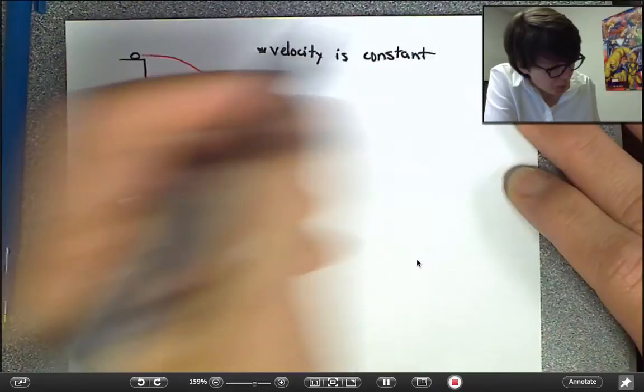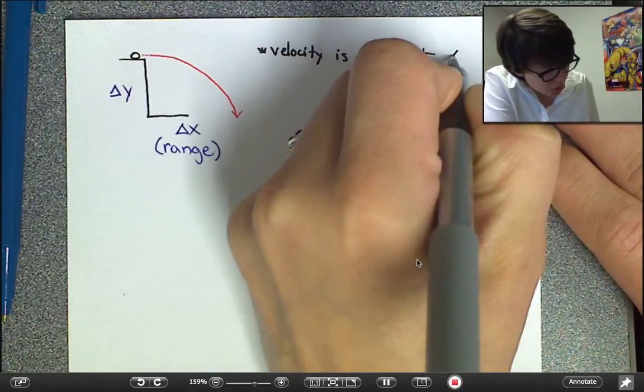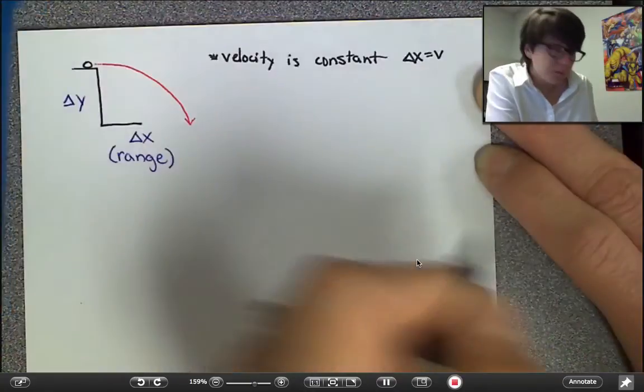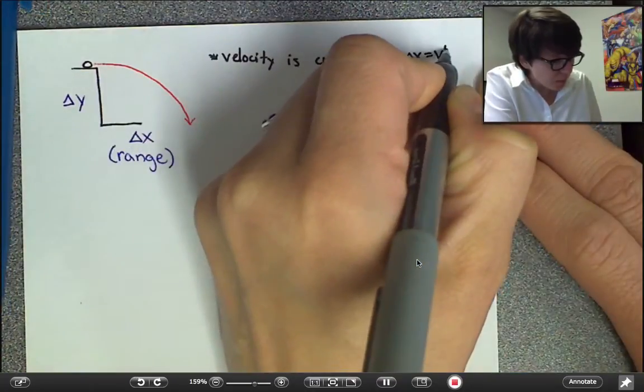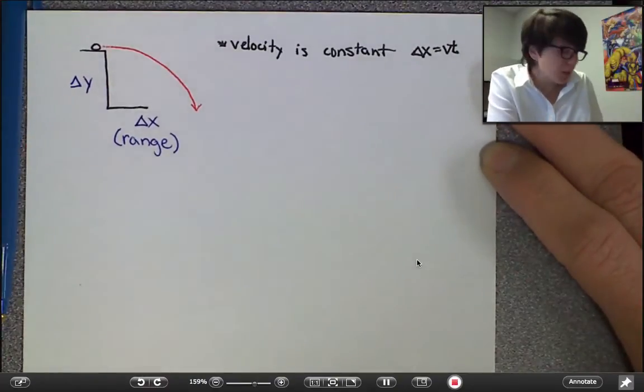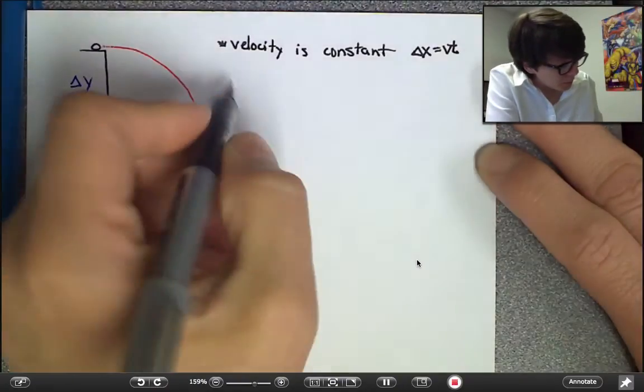When you have a constant velocity problem, remember that the distance something travels is equal to the velocity it's traveling at times the time that it travels for. You might recognize this from a prior class as distance equals rate times time.